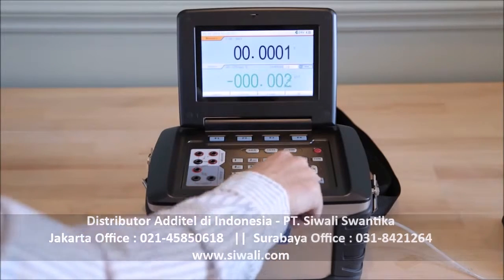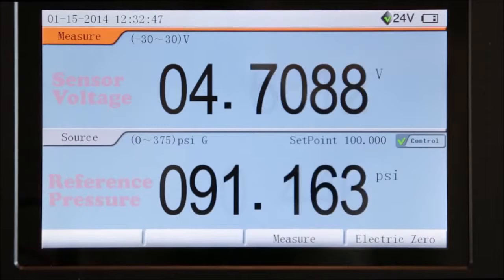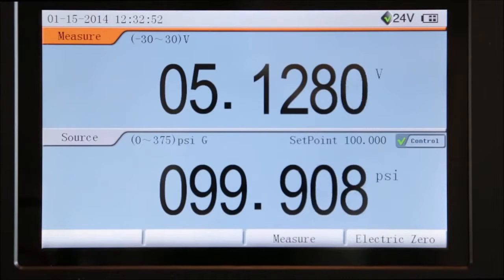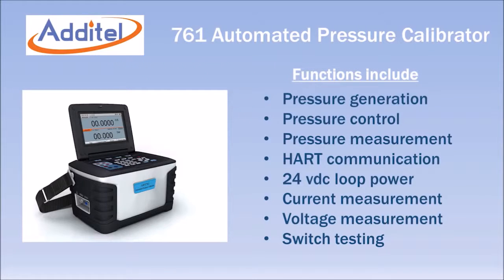The 761 also includes HART communication capability, 24 volt DC loop power, and can read the current or voltage produced by pressure transducers and transmitters.